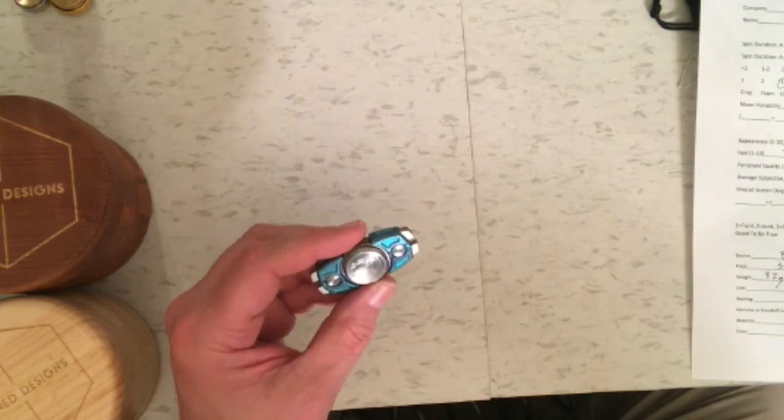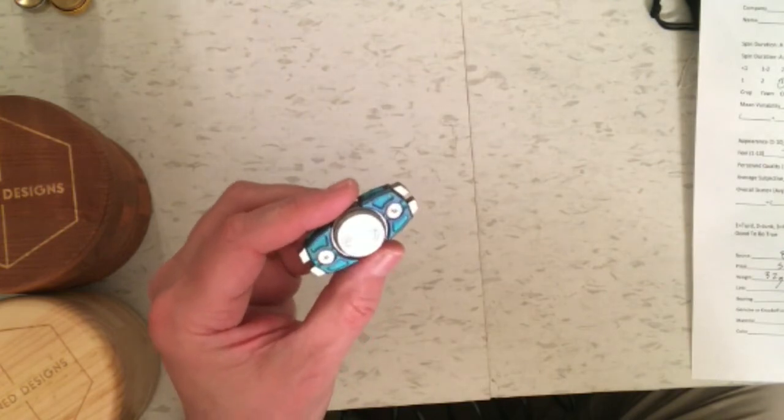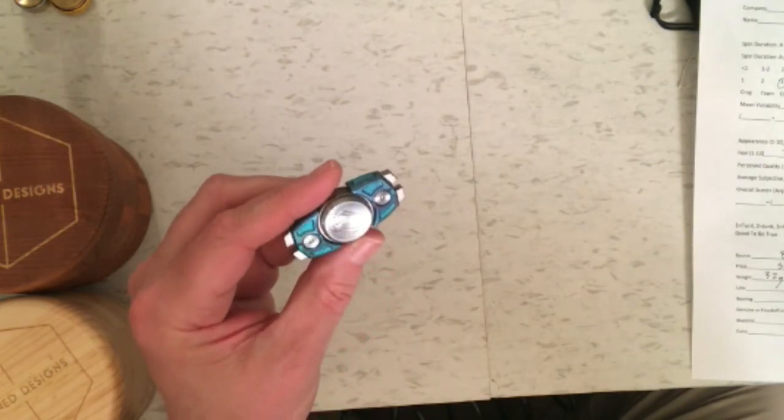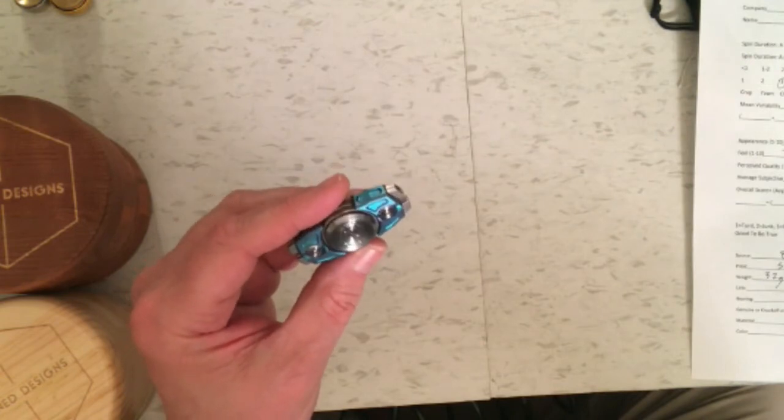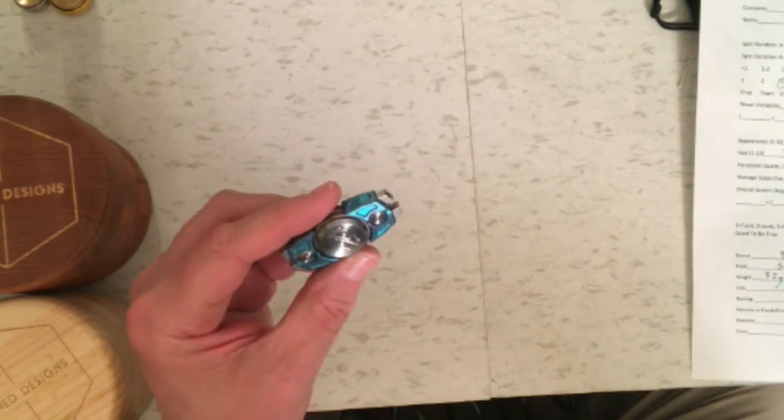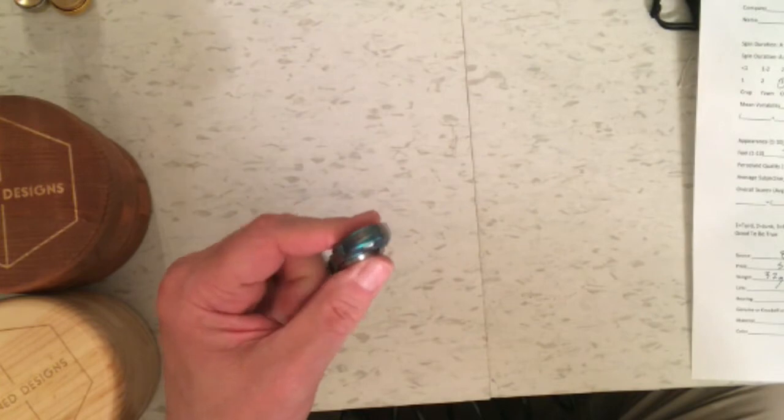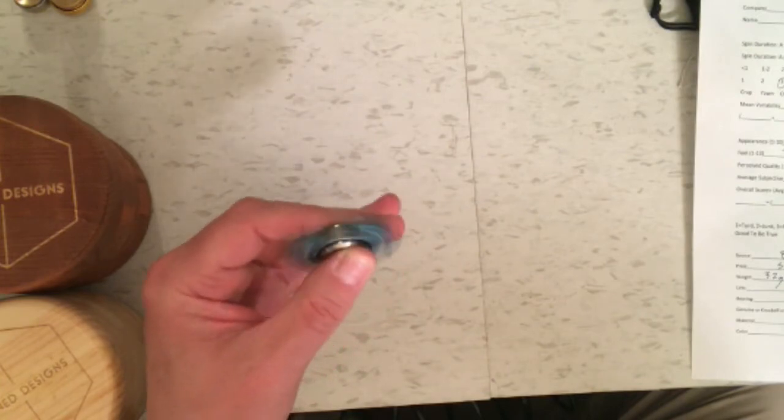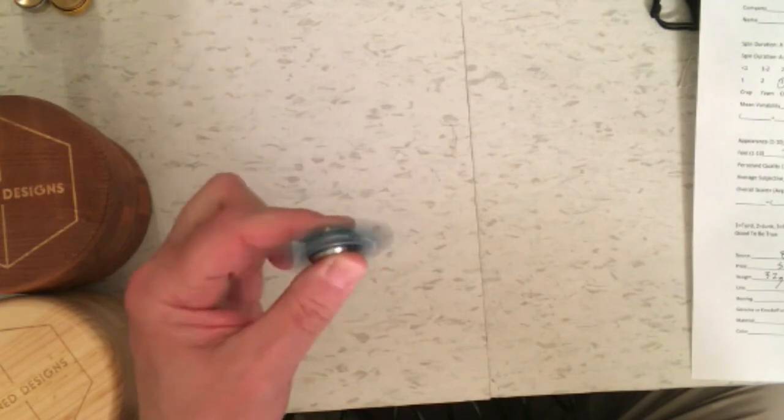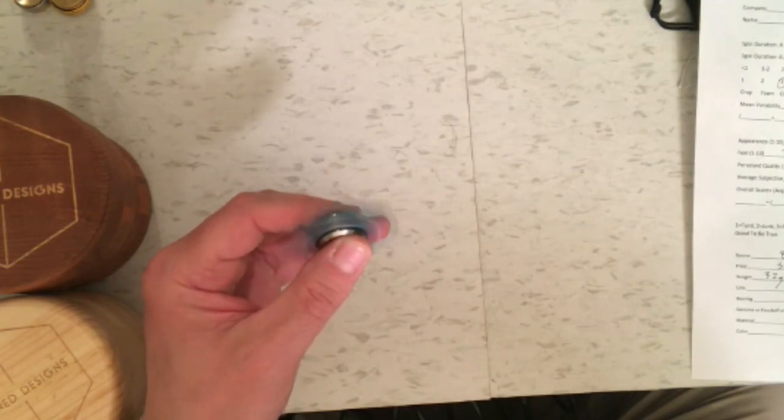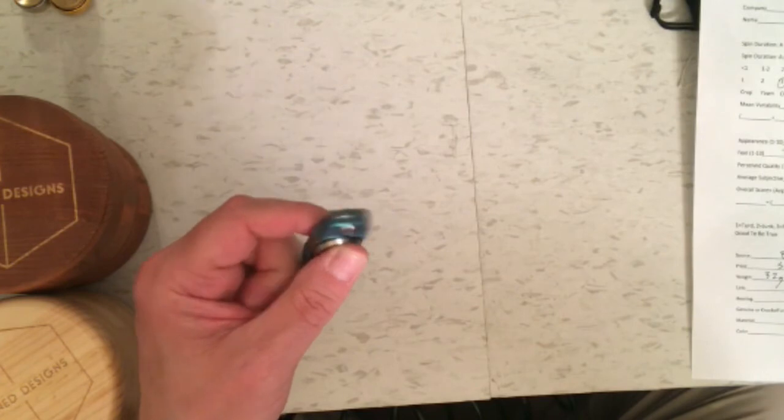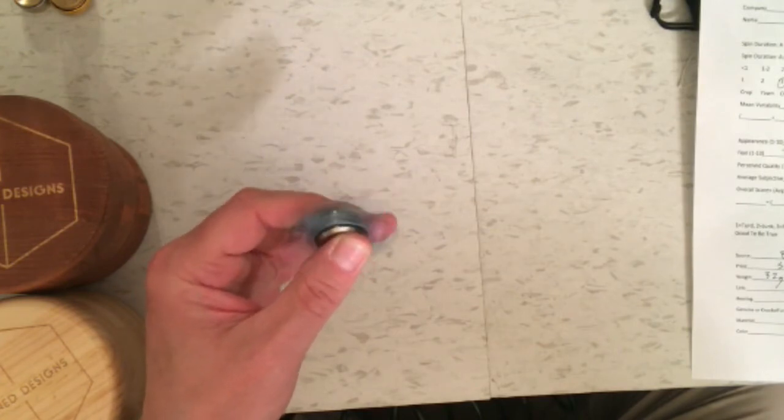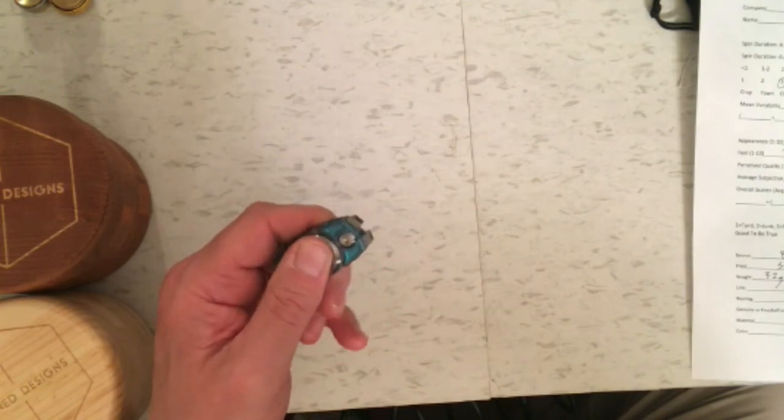In appearance score, I gave it a 9 because I think it does look pretty cool. It looks like a little Star Wars spaceship or something. So it's pretty cool looking. And the feel's not bad. It feels like most other bi-spinners. It's light. It only weighs 32 grams. So it kind of bounces around a little bit. But the feel's pretty good all in all. So I gave it a 7.5 on that.